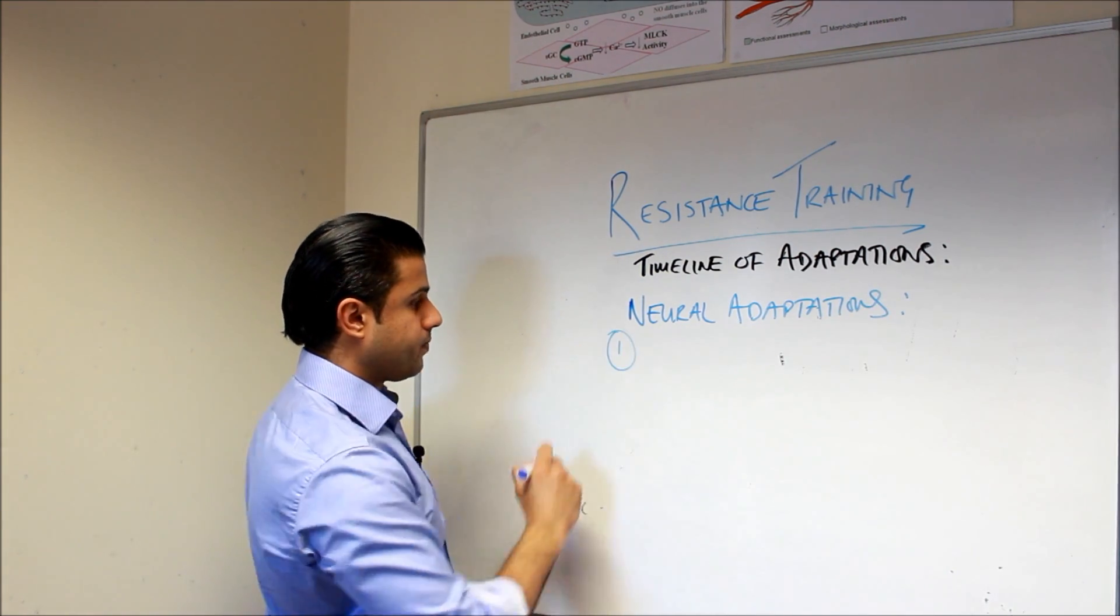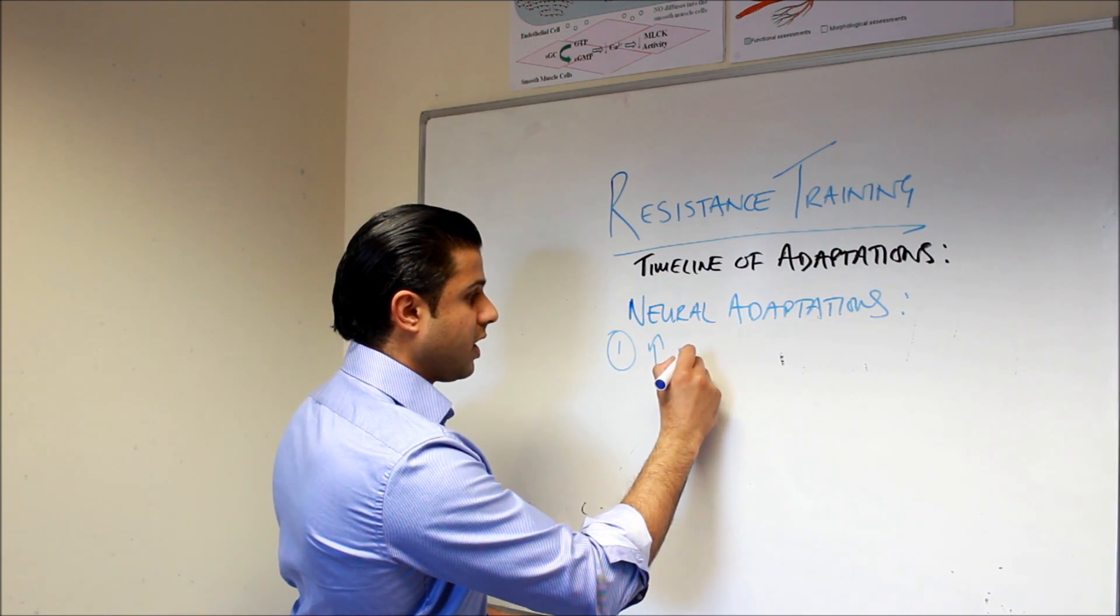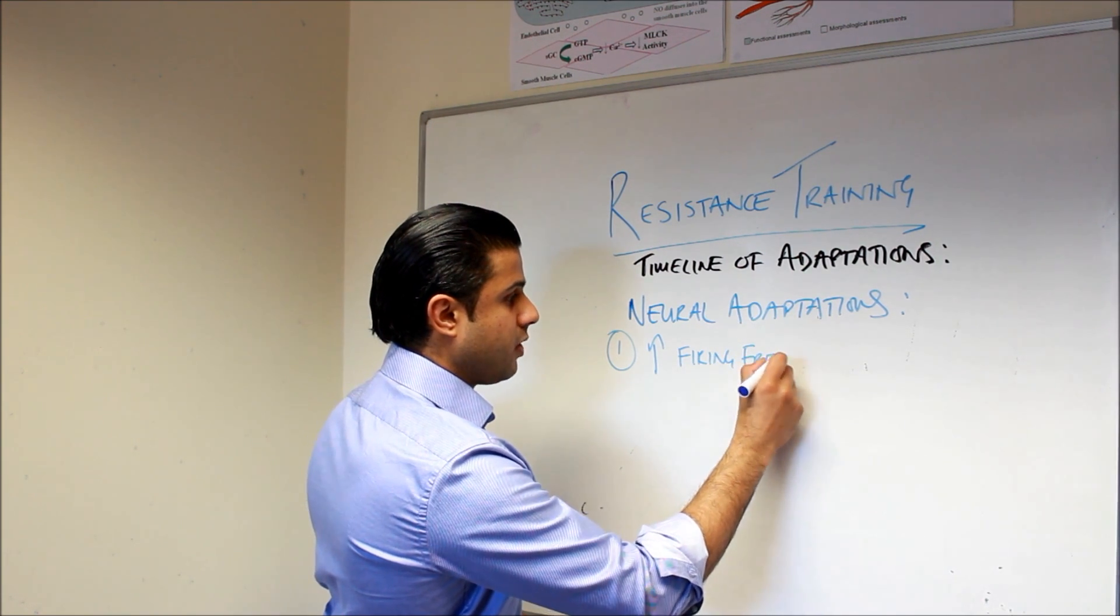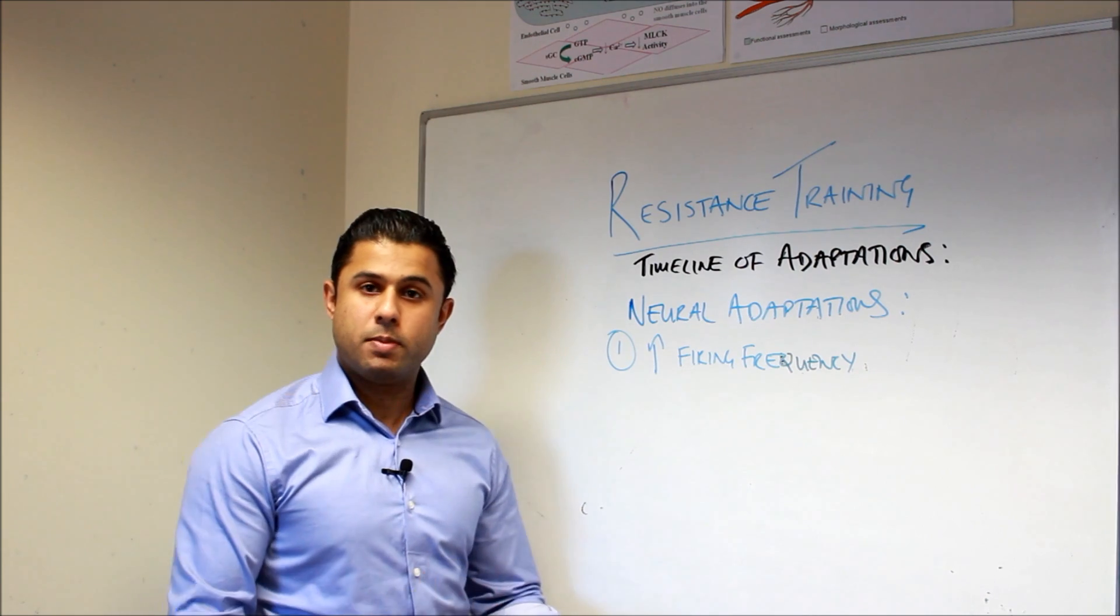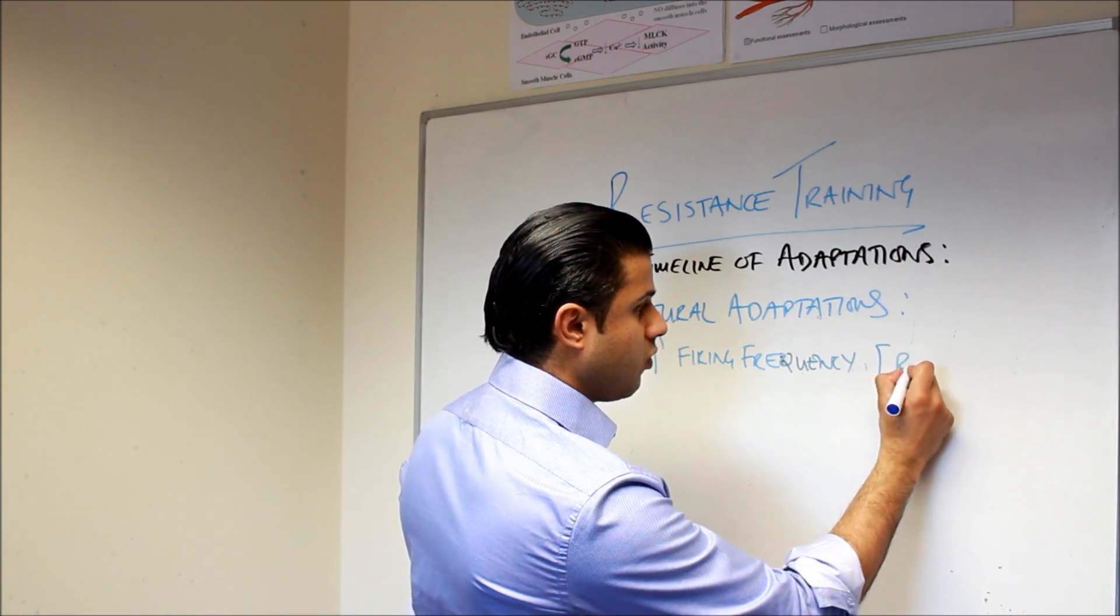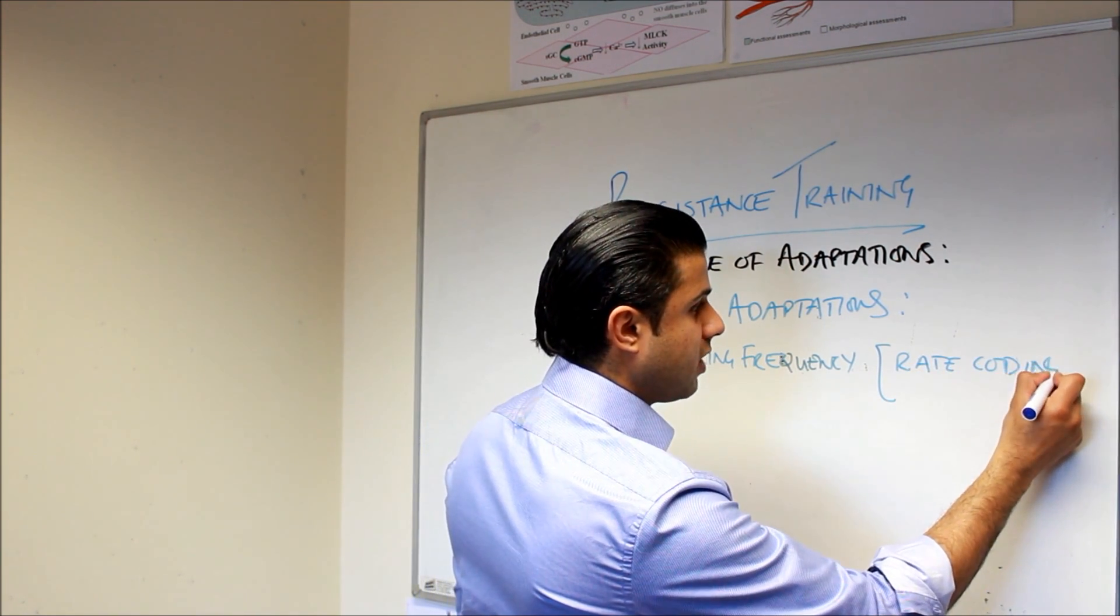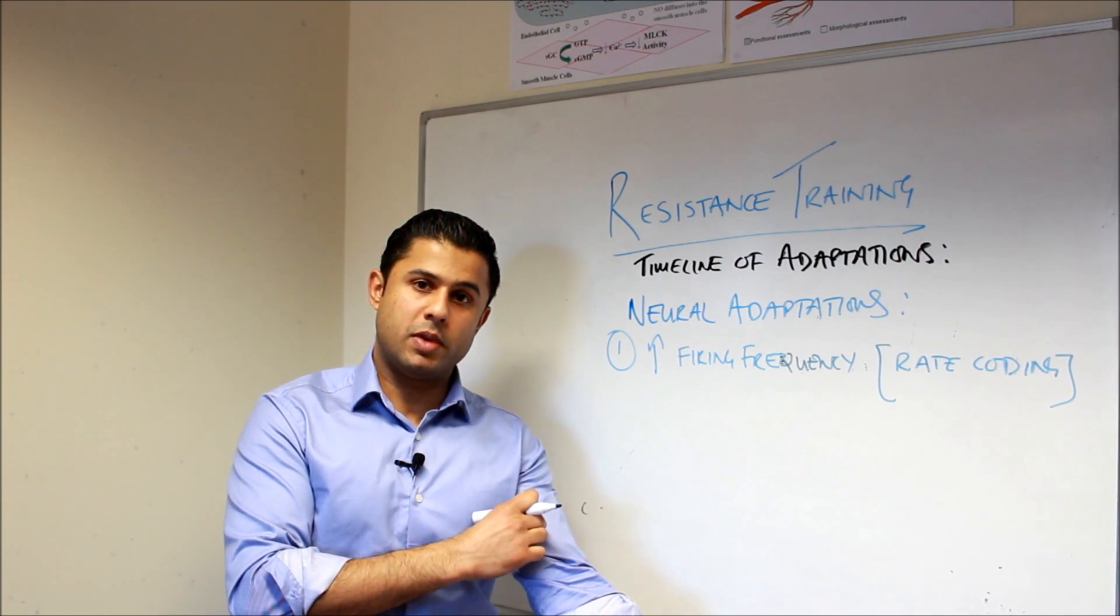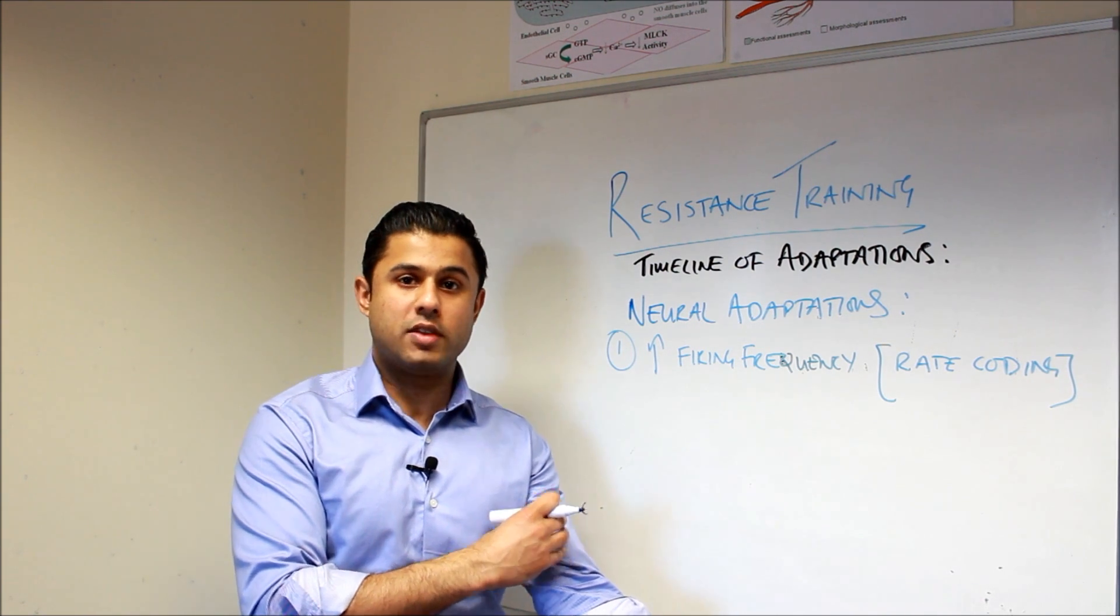So there's a couple of things that are happening. The first thing that's actually going to happen is we're going to get an increased firing frequency to the muscle. So we know that the muscle is receiving electrical stimulus to cause contraction of the muscle fibers. This is also known as rate coding.